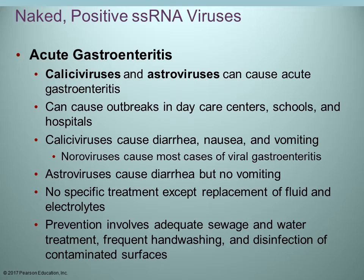Caliciviruses and astroviruses can cause acute gastroenteritis. Outbreaks are often associated with daycare centers, schools, and hospitals. Caliciviruses cause nausea, diarrhea, and vomiting. Noroviruses are a very common cause of viral gastroenteritis. Astroviruses also cause diarrhea but typically no vomiting. Treatment is to replace fluids and electrolytes and prevent dehydration. Prevention includes adequate sewage treatment, frequent hand washing, and disinfecting contaminated surfaces.